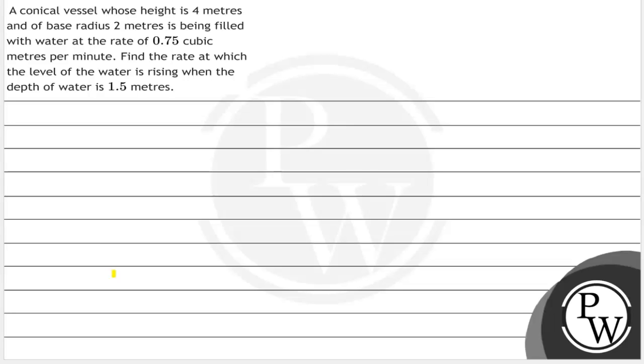Hello Bacho, let's read the question. A conical vessel whose height is 4 meters and base radius 2 meters is being filled with water at the rate of 0.75 cubic meters per minute. Find the rate at which the level of water is rising when the depth of the water is 1.5 meters.